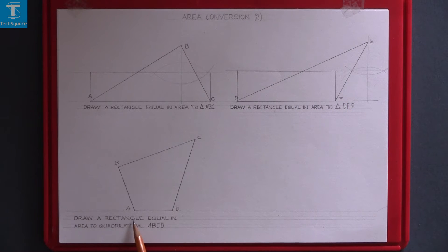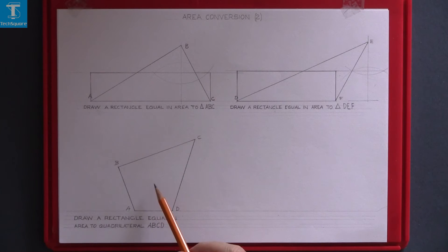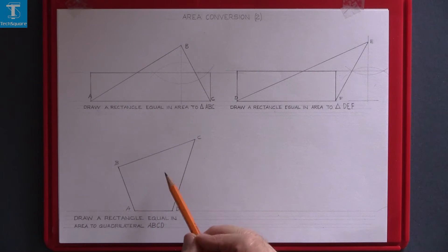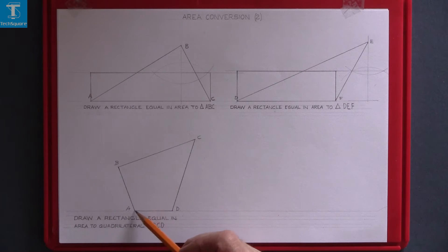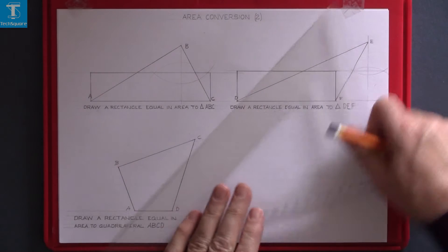Draw a rectangle equal in area to the quadrilateral ABCD. This is the quadrilateral. We have to draw a rectangle equal in area to it. The first thing we do is draw a triangle equal in area to it. To do that we join A to C.